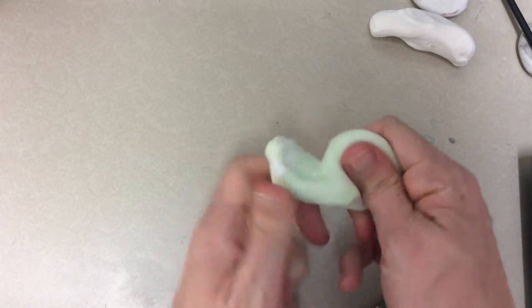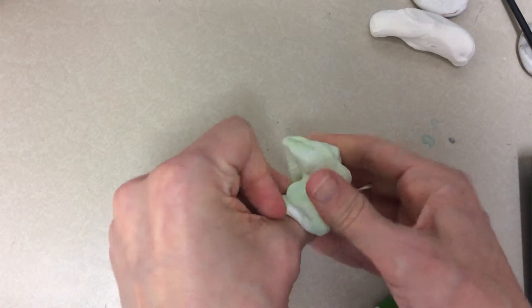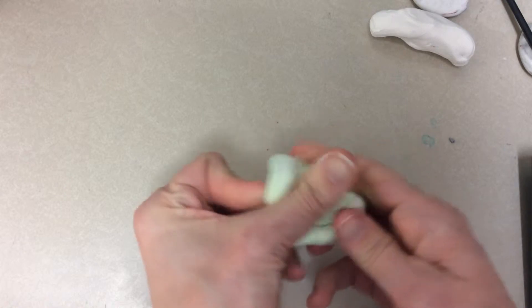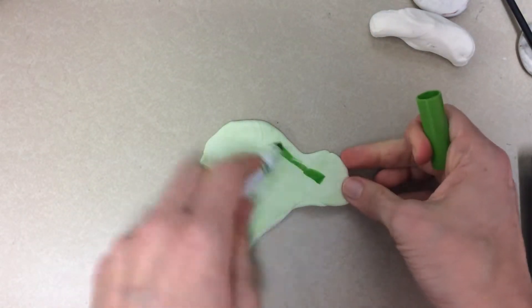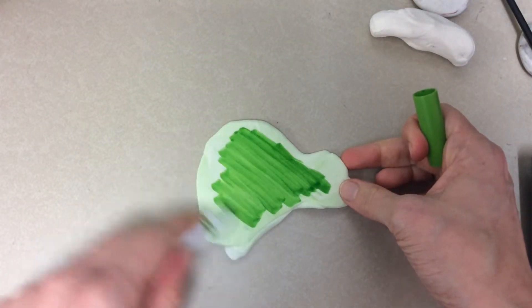So it's turning the whole piece green now. If you want your color to be darker, then all you would do is flatten it out again, add more color, and do the same thing again.